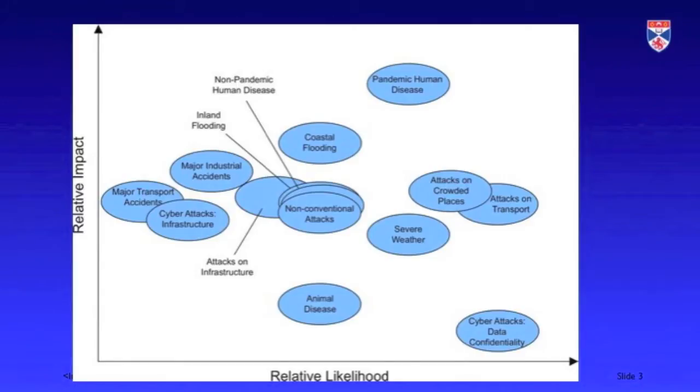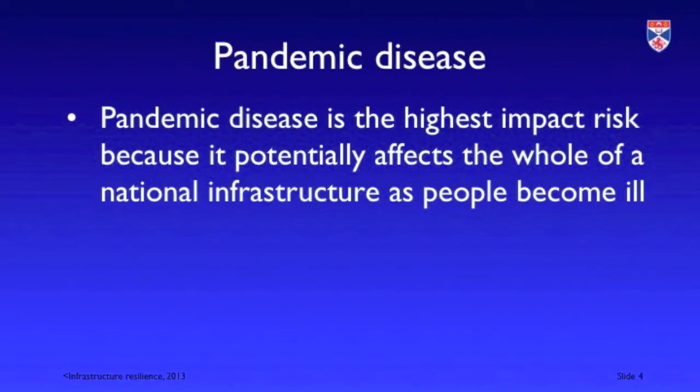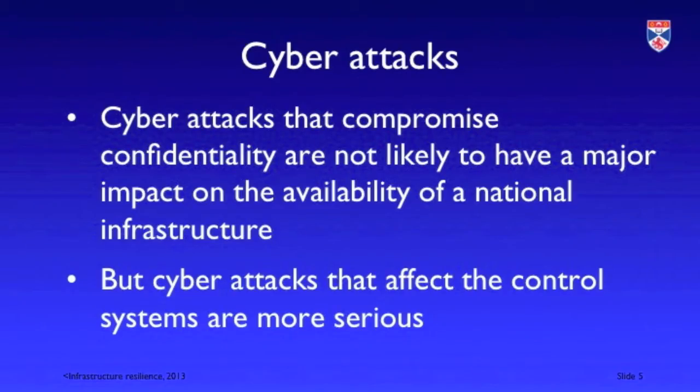In order to talk about resilience we need to know about the risks that the infrastructure faces. This diagram, produced by the British government, illustrates the kind of risks that critical infrastructure in Britain faces and the impact of those risks. The highest impact risk is seen as a pandemic disease, which has a huge impact because it affects people across the entire country — it's not a localized impact.